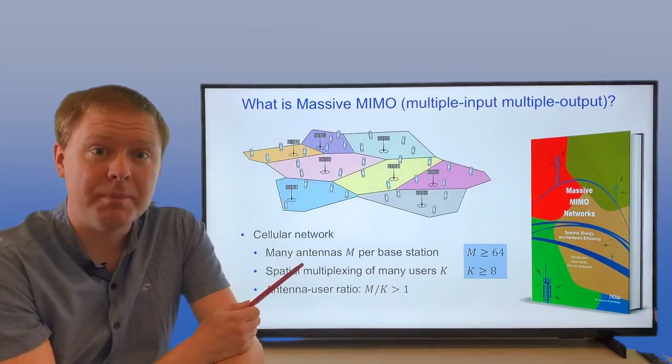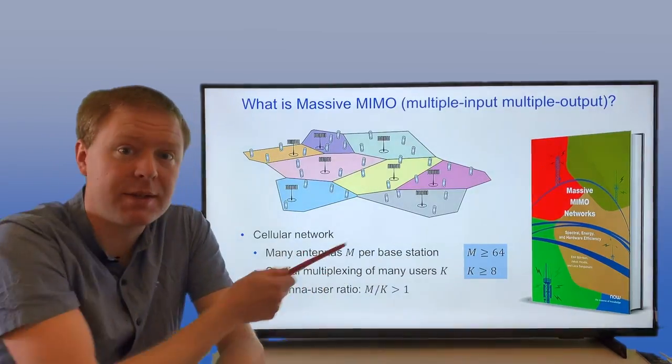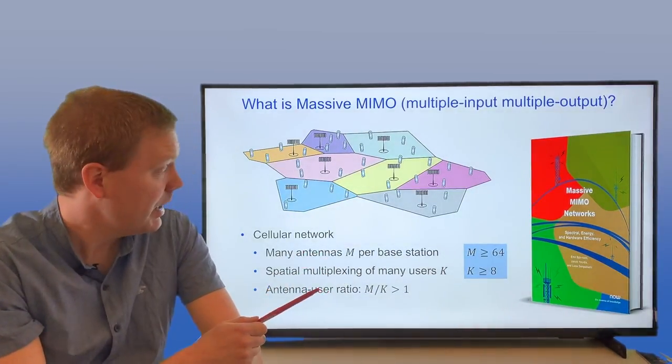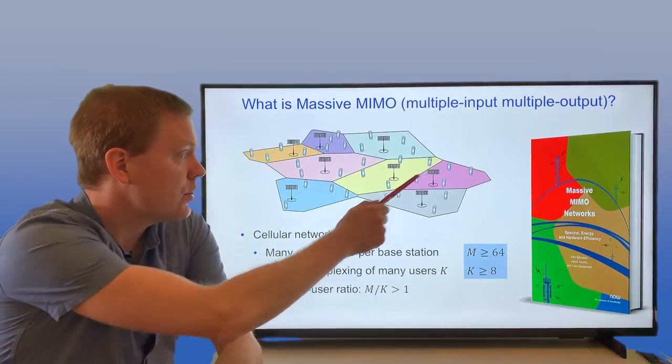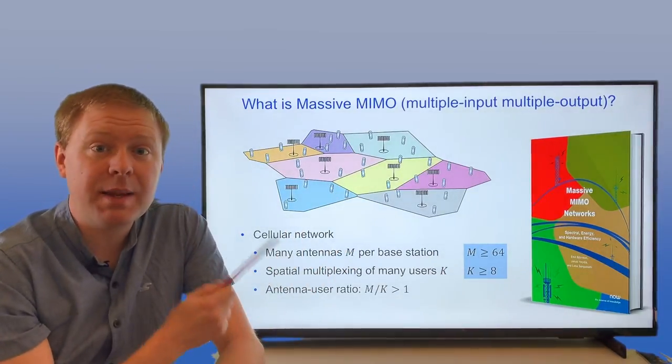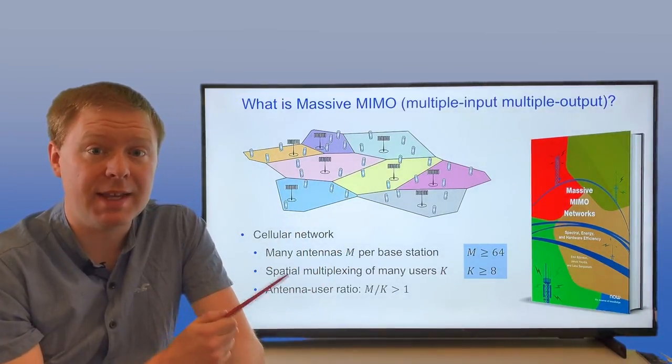Say m of them. We call it a massive number when m is 64 or larger, and we're using those antennas to serve multiple users at the same time and frequency within each cell.